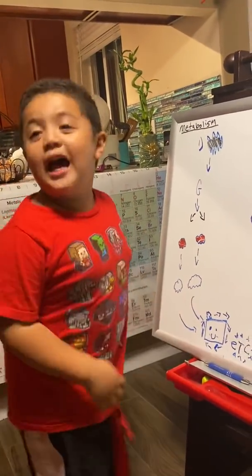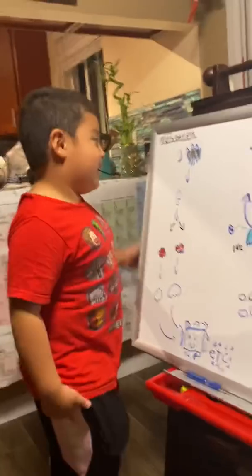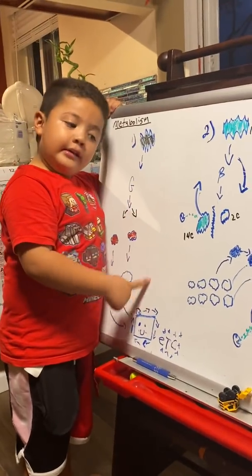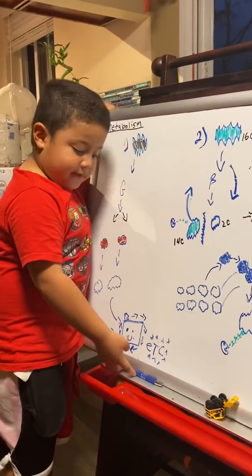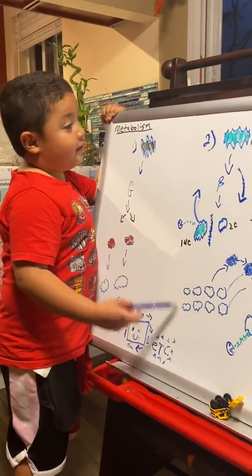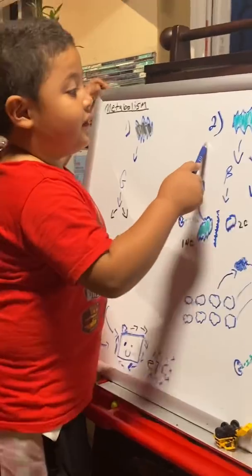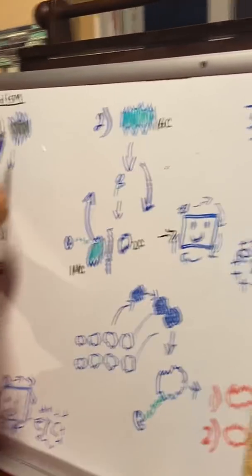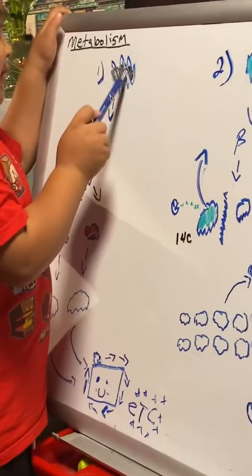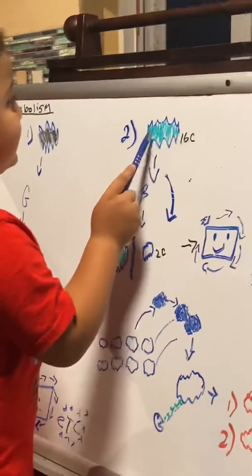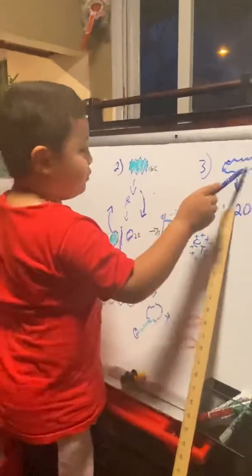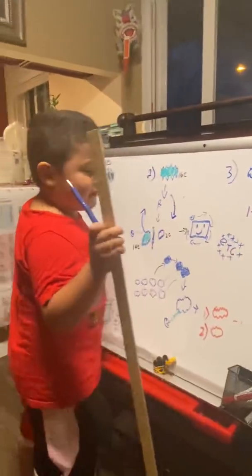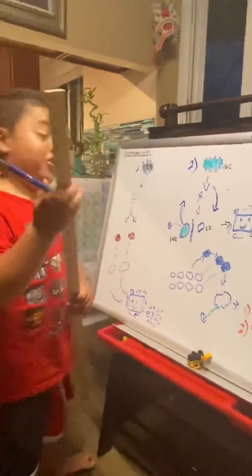Hi kids, it's Alex again. Today we're doing this — and you wonder what's this? These things are called carbohydrates. This is carbohydrate, and then here's fats, and this is protein. I wonder what to start off with first.